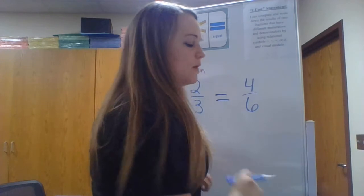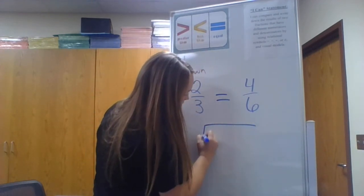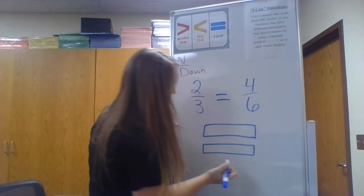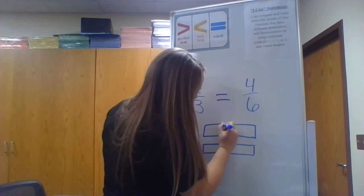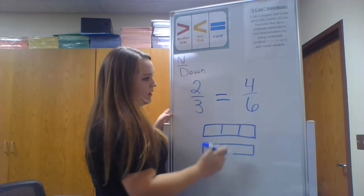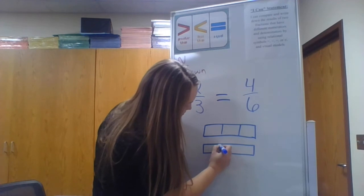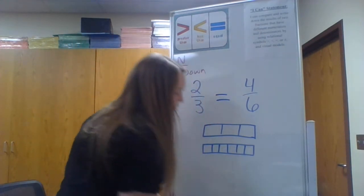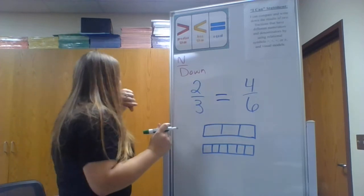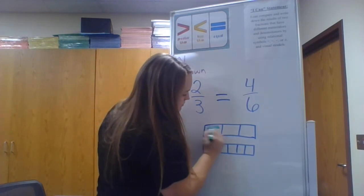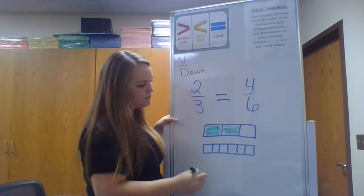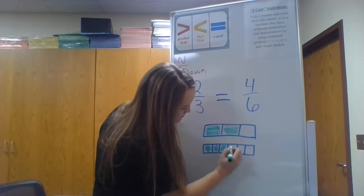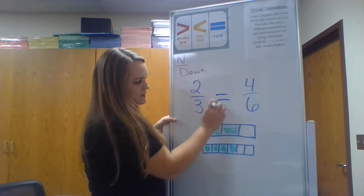Let's look at them with our square models as well. We're going to make 3 equal parts on one rectangle, and 6 equal parts on the other. We're going to color in 2 of these thirds, and then color in 4 of these sixths. As you can tell, they're equal right there — and that's how you can determine they're equal.